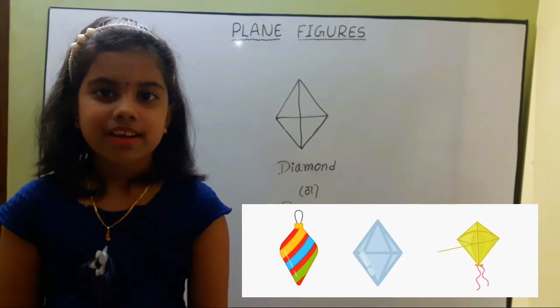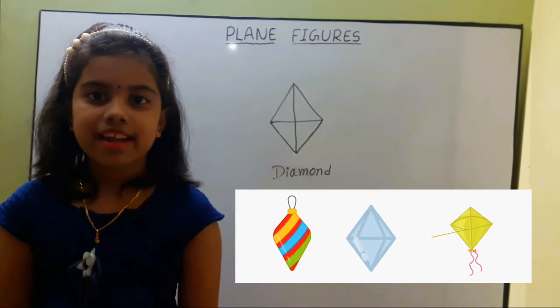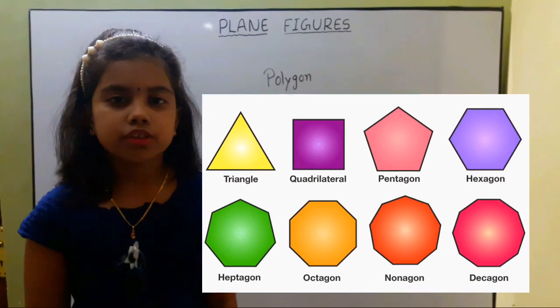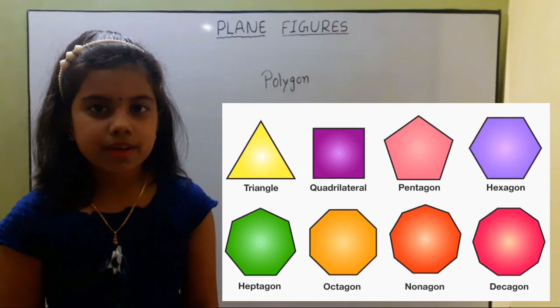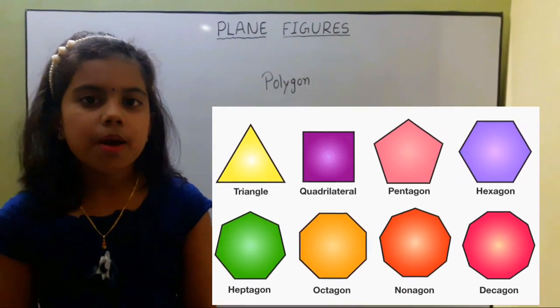Examples of diamond in real life are diamond shape earrings and a kite. Next one is polygon. Closed plane figures which made of three or more line segments are called polygon.